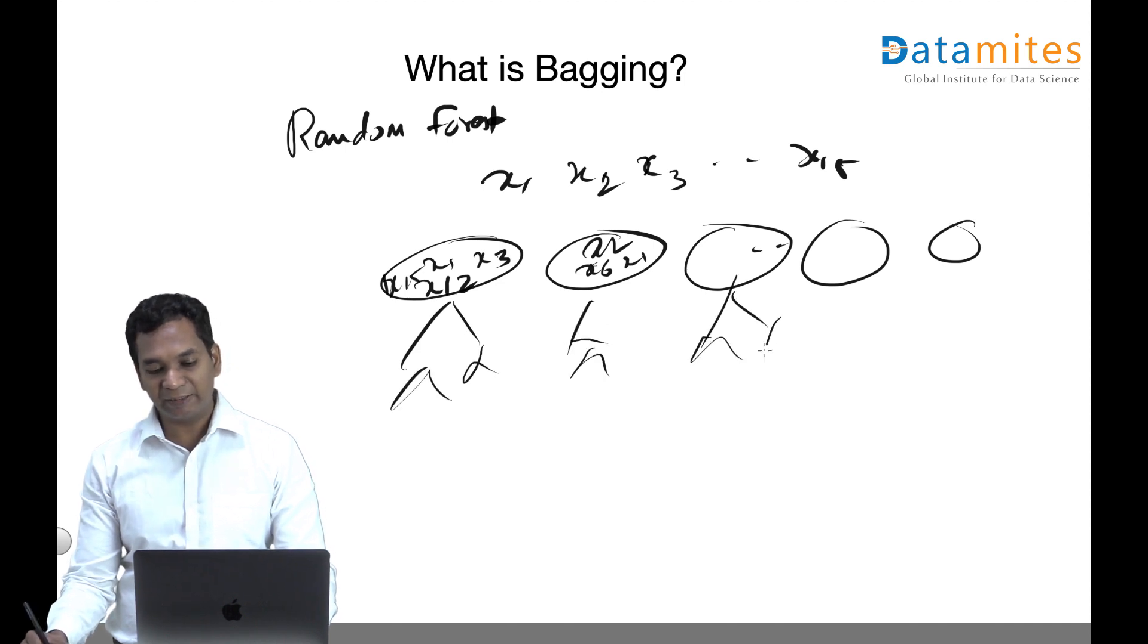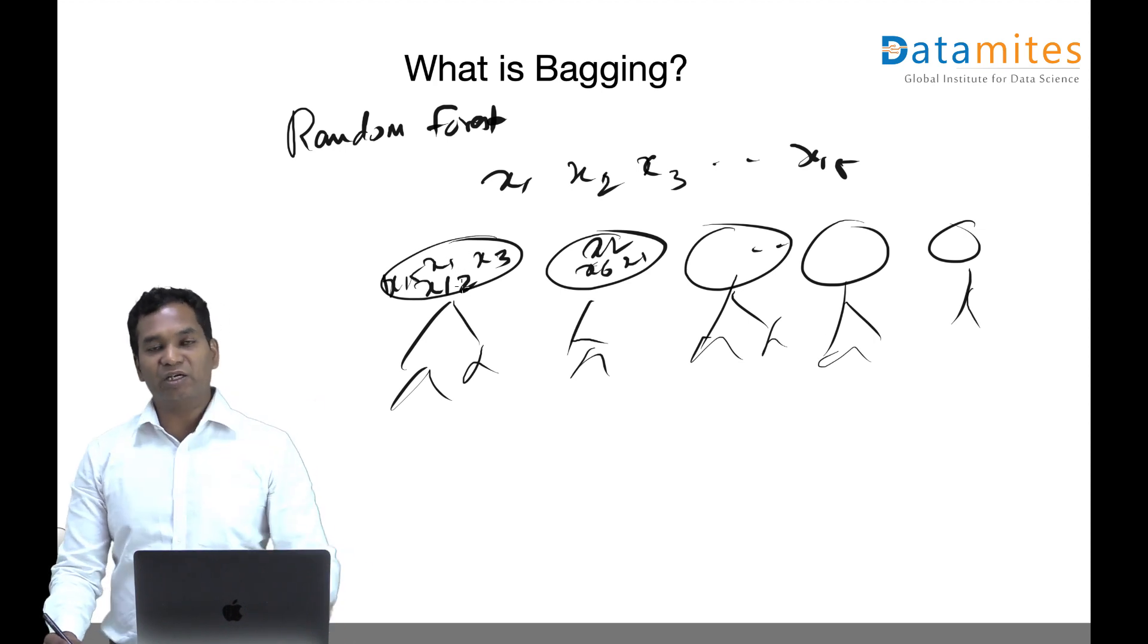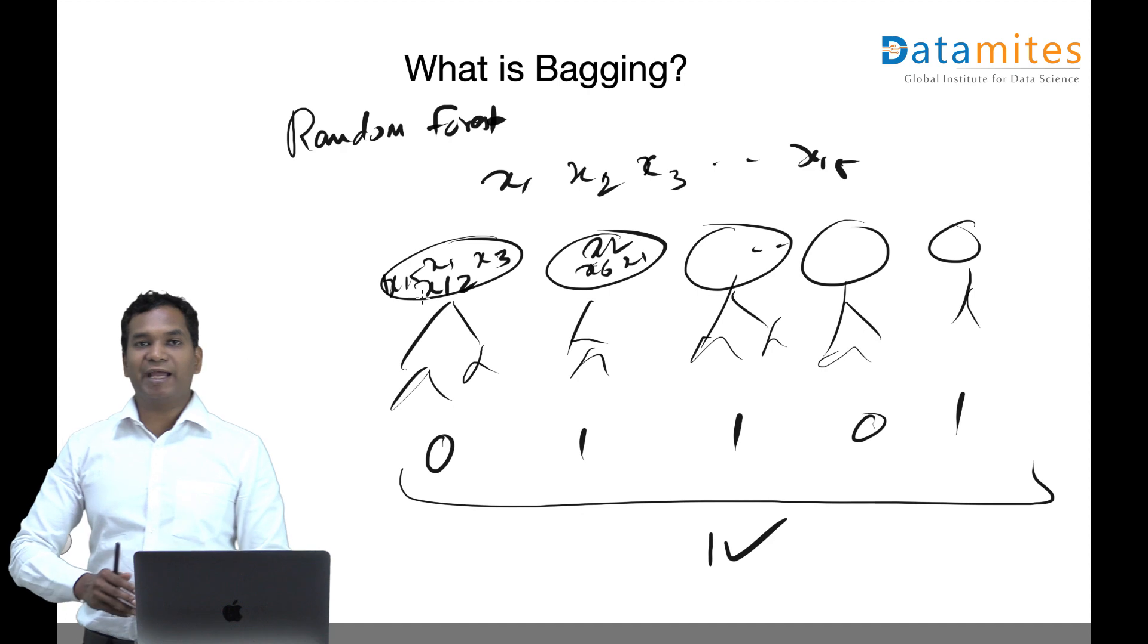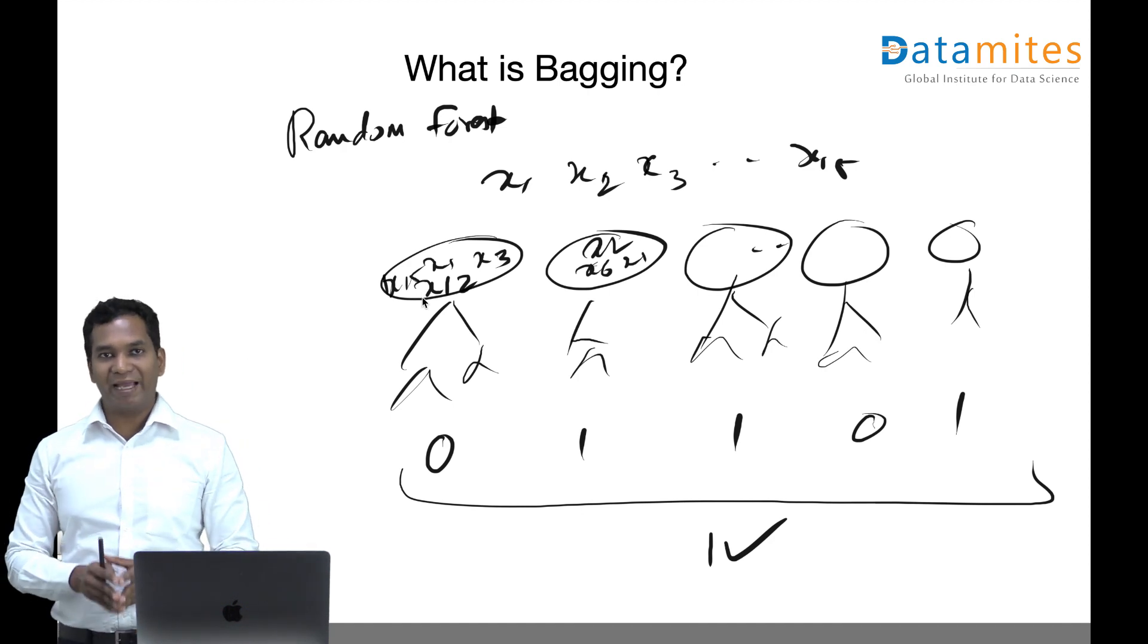Each one comes up with some kind of output. If it's a classification between zero and one or something like this, we take a majority vote. Because we have three ones, we say one is the output. This is actually implementation of the bagging technique in random forest.